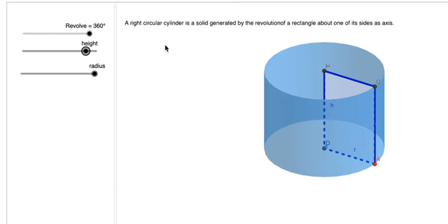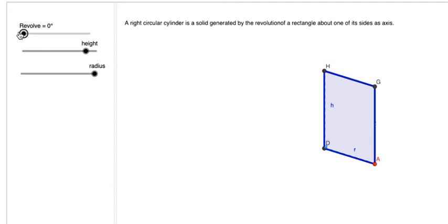A right circular cylinder is a solid generated by the revolution of a rectangle about one of its sides as axis. This model illustrates the process: if you revolve this and change this angle, it is a rectangle.